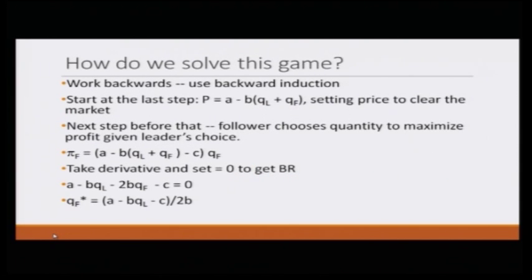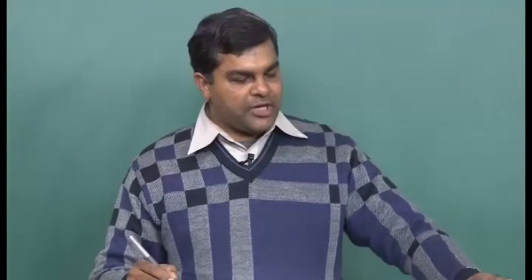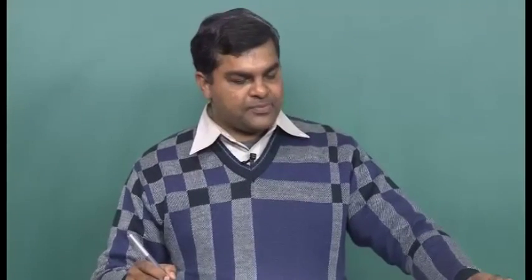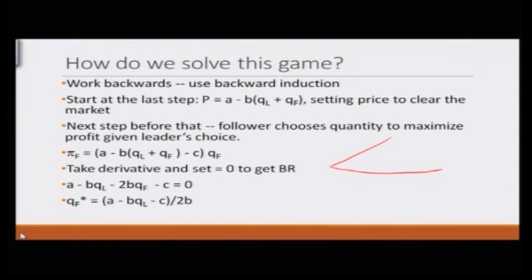How should we solve such a game? The technique we have learned is backward induction — work backward. Start at the last step: P = A − B(QL + QF). Before that step, the follower chooses quantity to maximize profit given the leader's output. If we denote it in a game tree, the leader moves first, then the follower decides, and then the payoffs are realized.